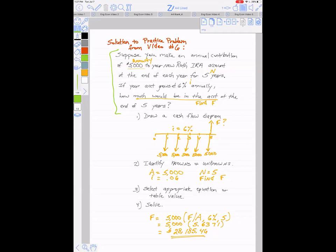Suppose you were to make an annual contribution to your new Roth IRA, $5,000 amount every year at the end of each year for five years, so that would be n. If your account grows at 6% annually, so that would be the interest rate, how much would be in the account at the end of five years?